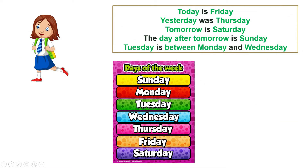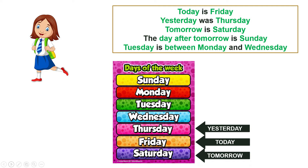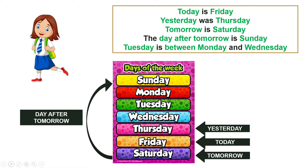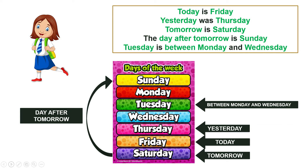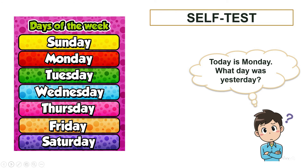Now look at this. If today is Friday, yesterday was Thursday, and tomorrow will be Saturday. The day after tomorrow will be Sunday. Tuesday will be between Monday and Wednesday. Let's do a self-test.